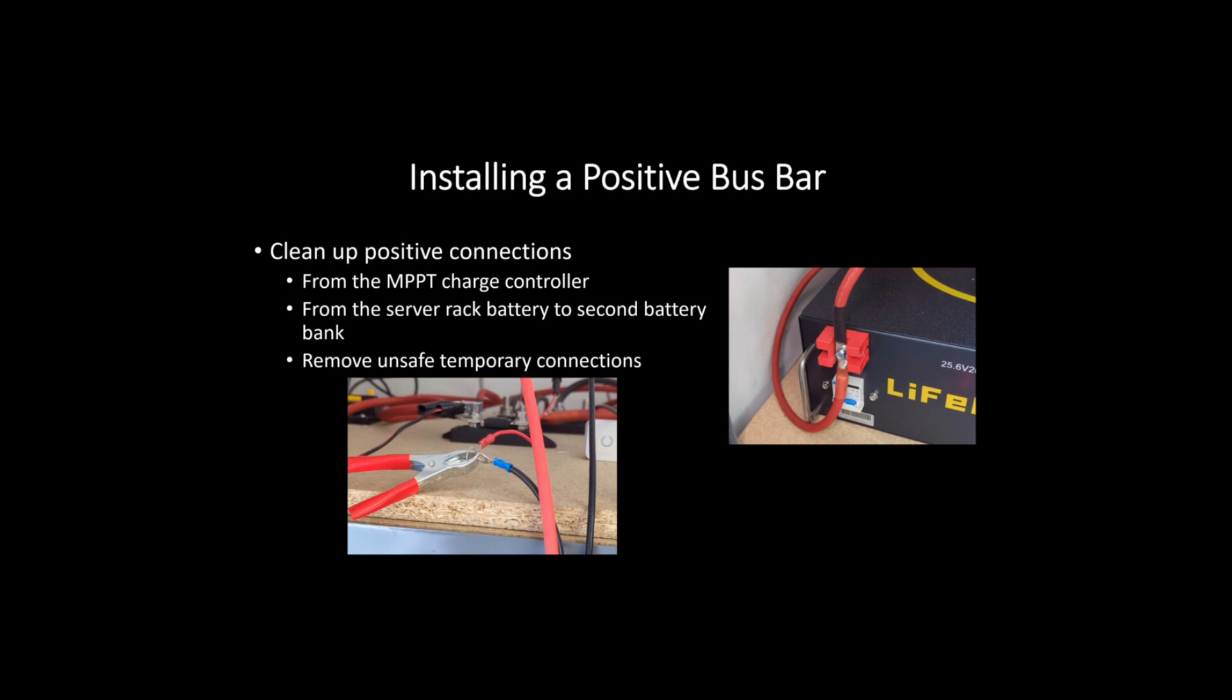That's going to involve cutting some 2-gauge wire, crimping lugs on it, and making our connections to the bus bar. This will allow us to clean up some of our positive terminal connections we have going to and from the battery system.